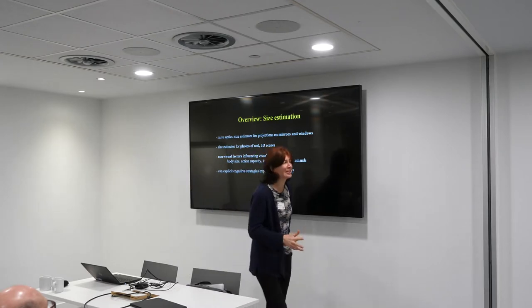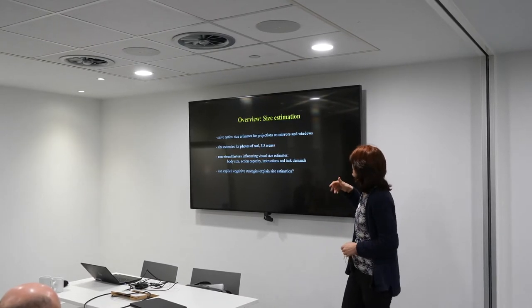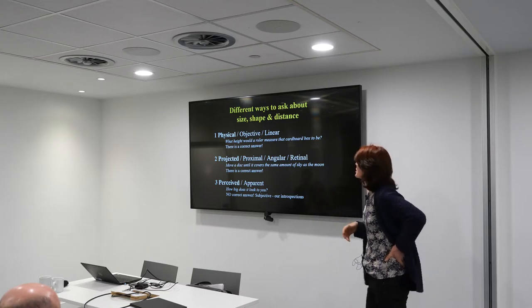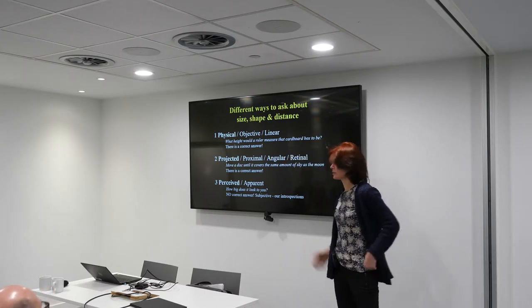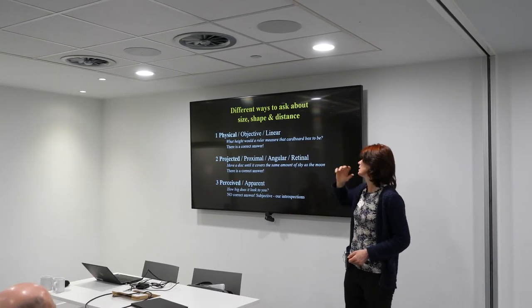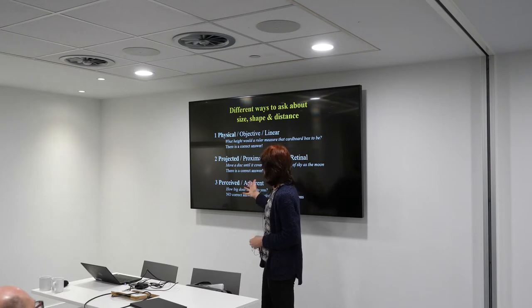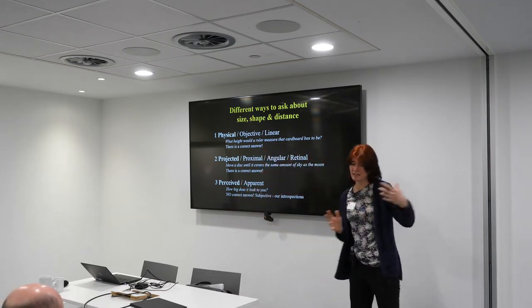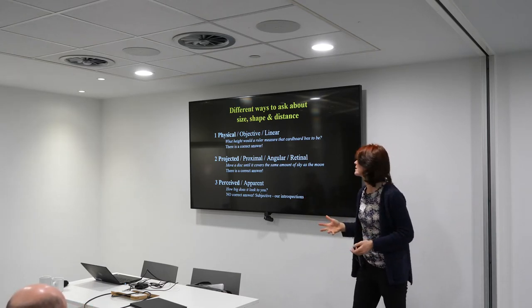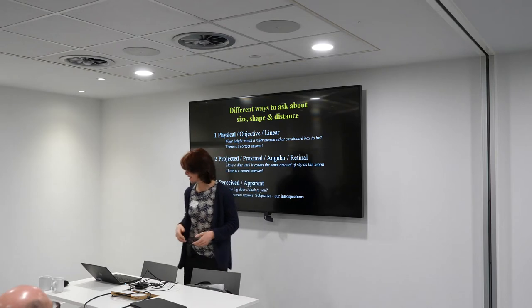I want to be really clear on what I'm going to be asking people, because I think it's not always clear in the literature. There are three ways I'm going to be asking people about size — and you can also ask about shape and distance. We can talk about the physical size, which would be if you drew out a ruler, how many centimetres would this object measure. We can also talk about projected size — basically the angular projection, how many degrees of visual angle the object takes up. And then we've got perceived or apparent size, which isn't always clearly distinguished, but it's how big something appears to you. The first two, physical size and projected size, have clear objective answers, whereas perceived size is some kind of introspective subjective feeling that we can't say you got wrong.